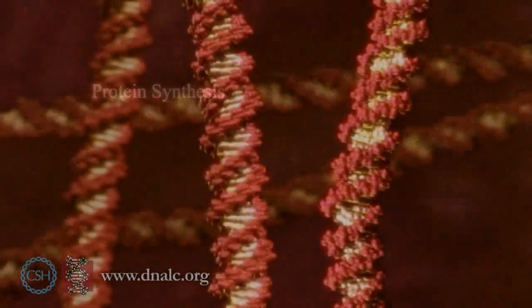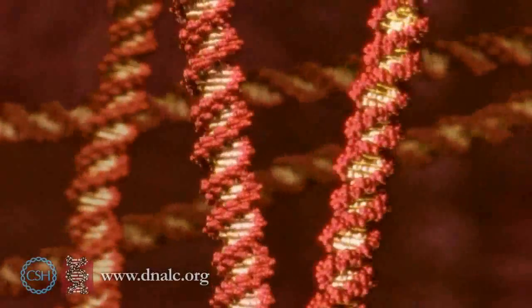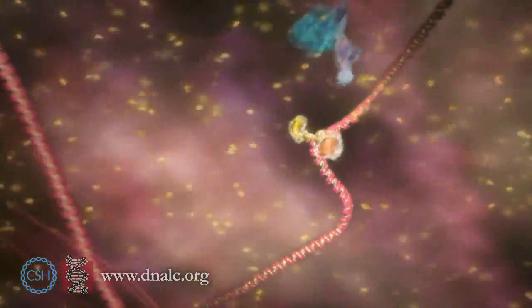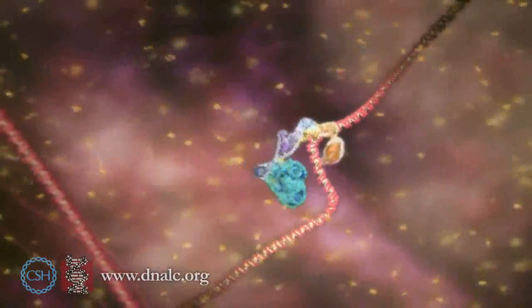The DNA double helix contains two linear sequences of the letters A, C, G, and T which carry coded instructions.